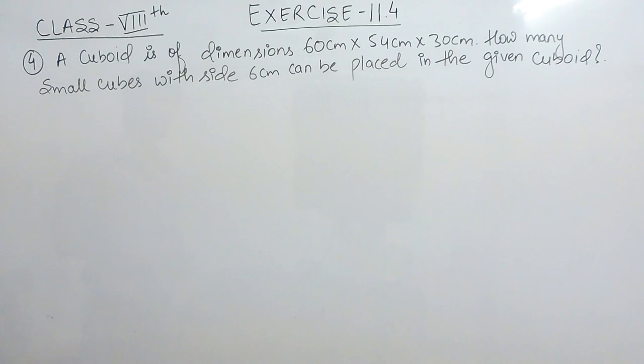The question is: a cuboid is of dimensions 60 cm × 54 cm × 30 cm. How many small cubes with side 6 cm can be placed in the given cuboid?